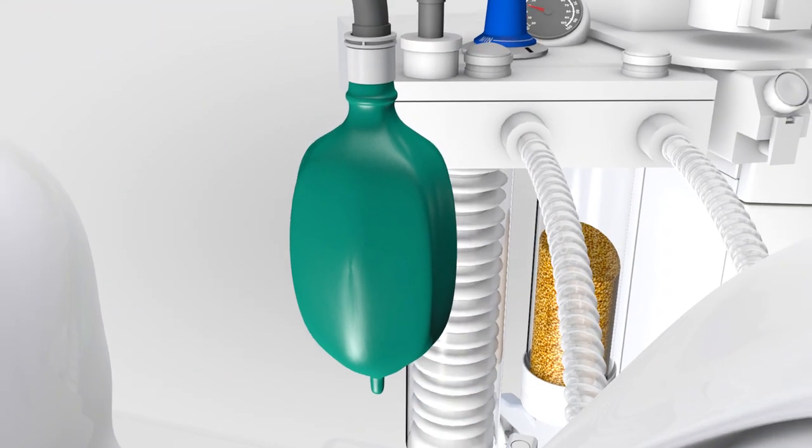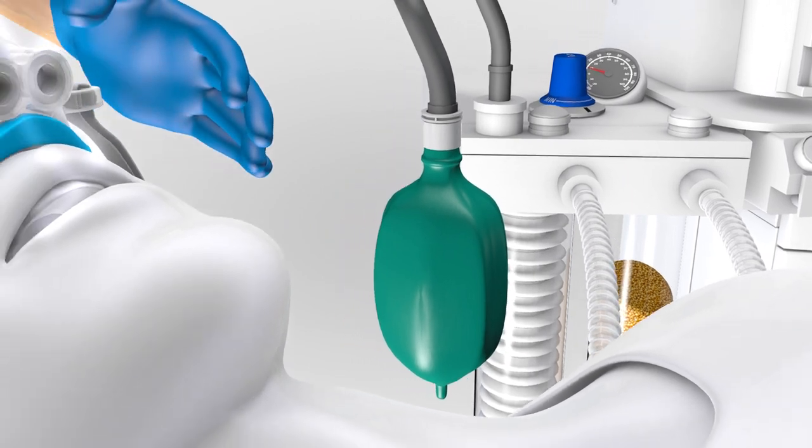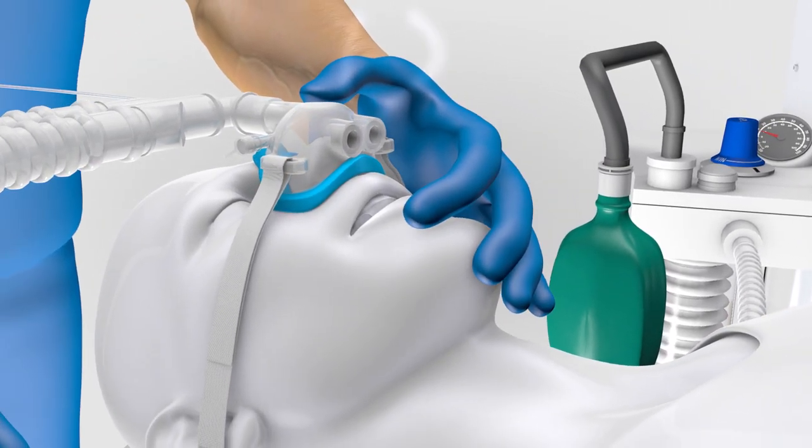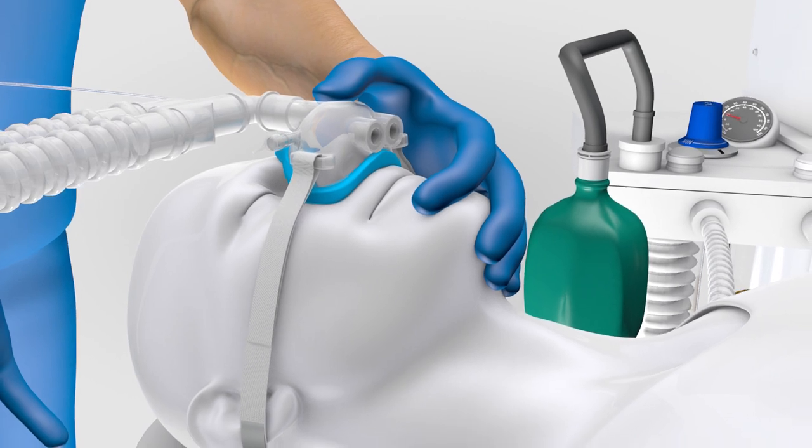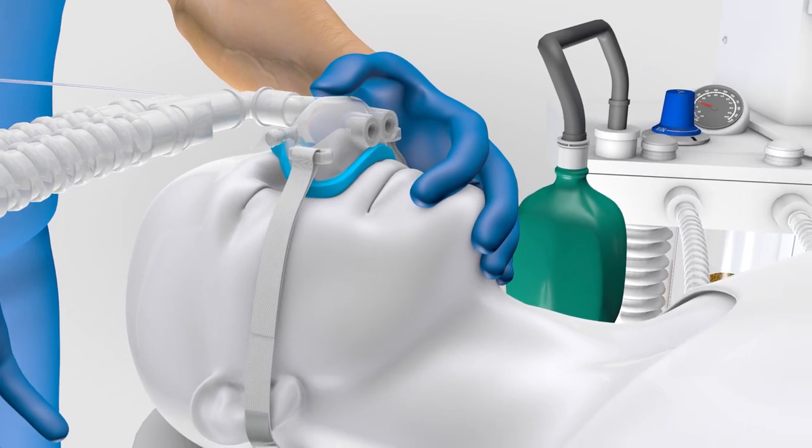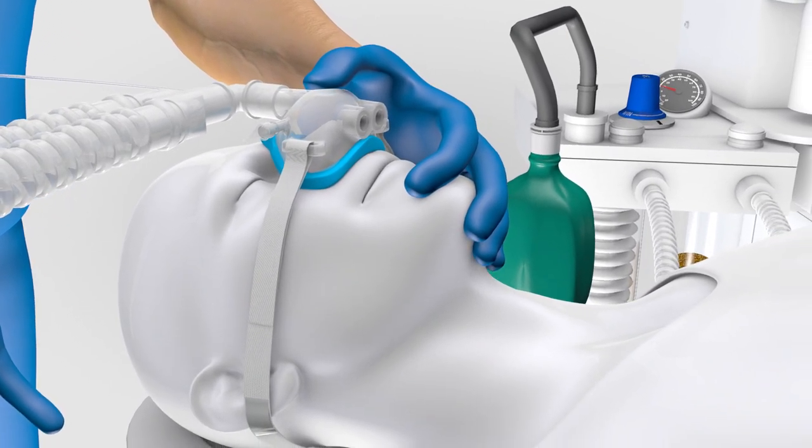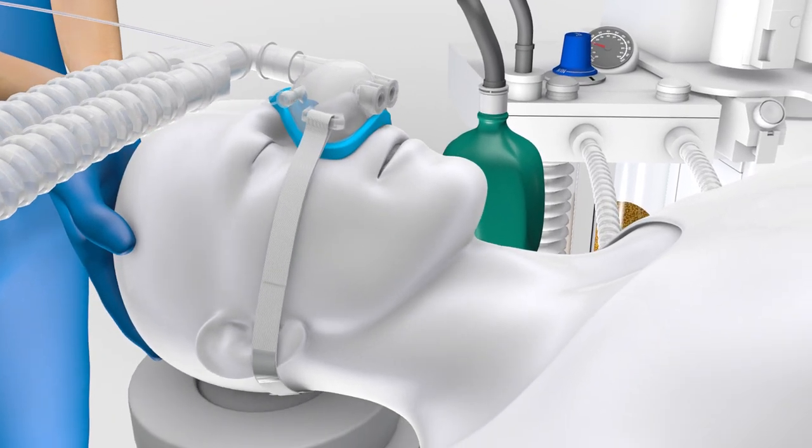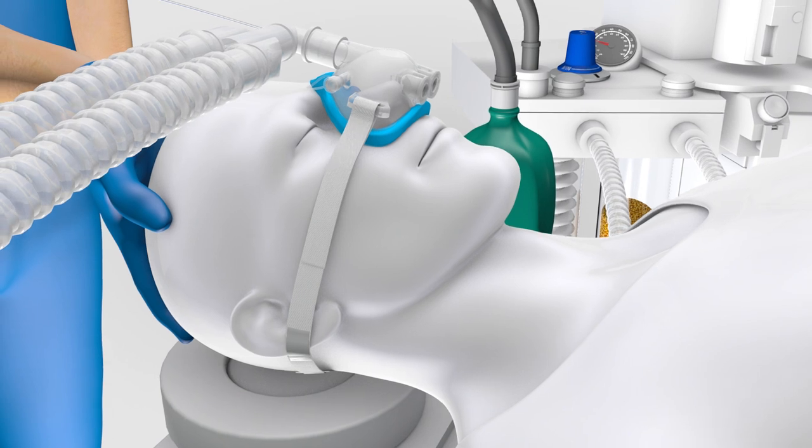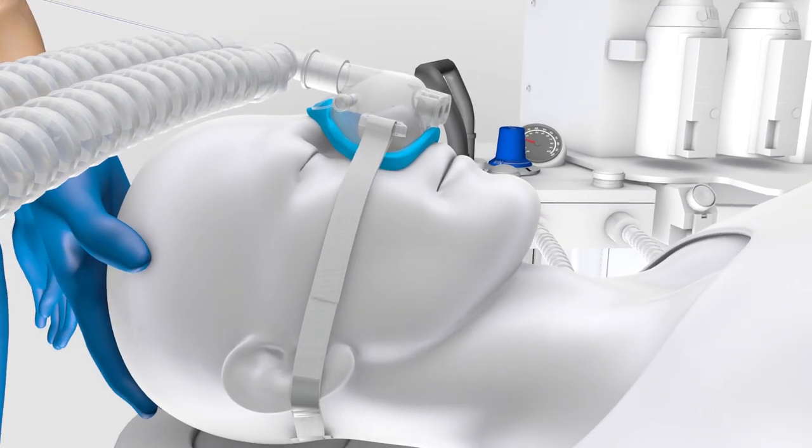In some patients, the reservoir bag may not pressurize due to leak from the oral cavity. Manual closure of the mouth or firm submental pressure to the base of the tongue will occlude the oral cavity and allow for effective pressurization and ventilation via the nasal cavity. For many patients, slight flexion of the head is also adequate to occlude the oral cavity and minimize leak from the mouth.